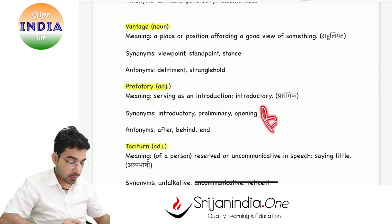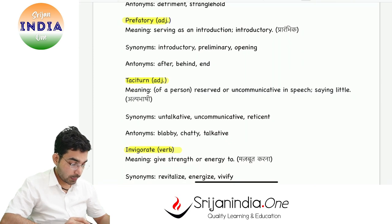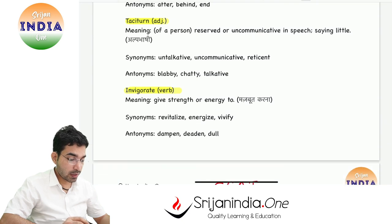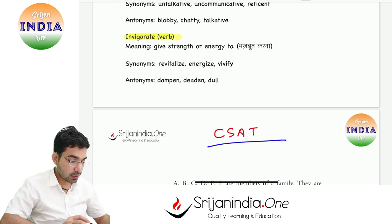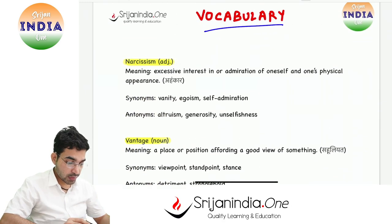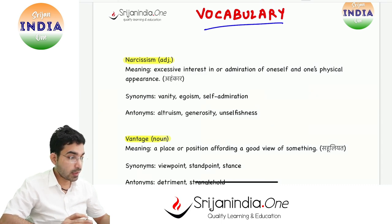Prefatory means prarambhik - serving as an introduction, introductory. Taciturn means alp bhashi - reserved or uncommunicative in speech. Invigorate means majboot karna - gives strength or energy. If you come across any other important word, write it down with its meaning in the comment section below.